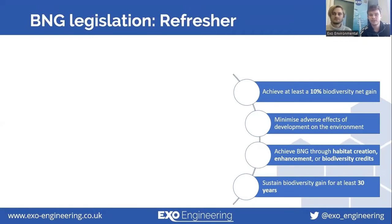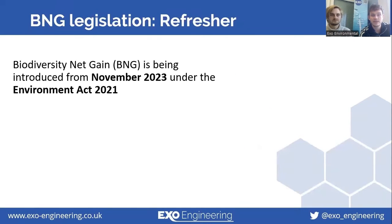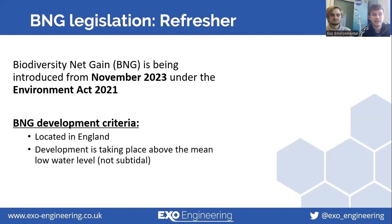Hi everyone, my name is Jack Catamole. I'll be doing a little refresher of biodiversity net gain legislation. Biodiversity net gain is being introduced from November 2023. The government announced at the end of last month that there will be a two-month delay, so this will actually come into force now in January 2024. It's still being enforced under the Environment Act 2021. Biodiversity net gain will apply to all developments which are located in England, are taking place above the mean low water level, and are greater than 25 metres squared in size.